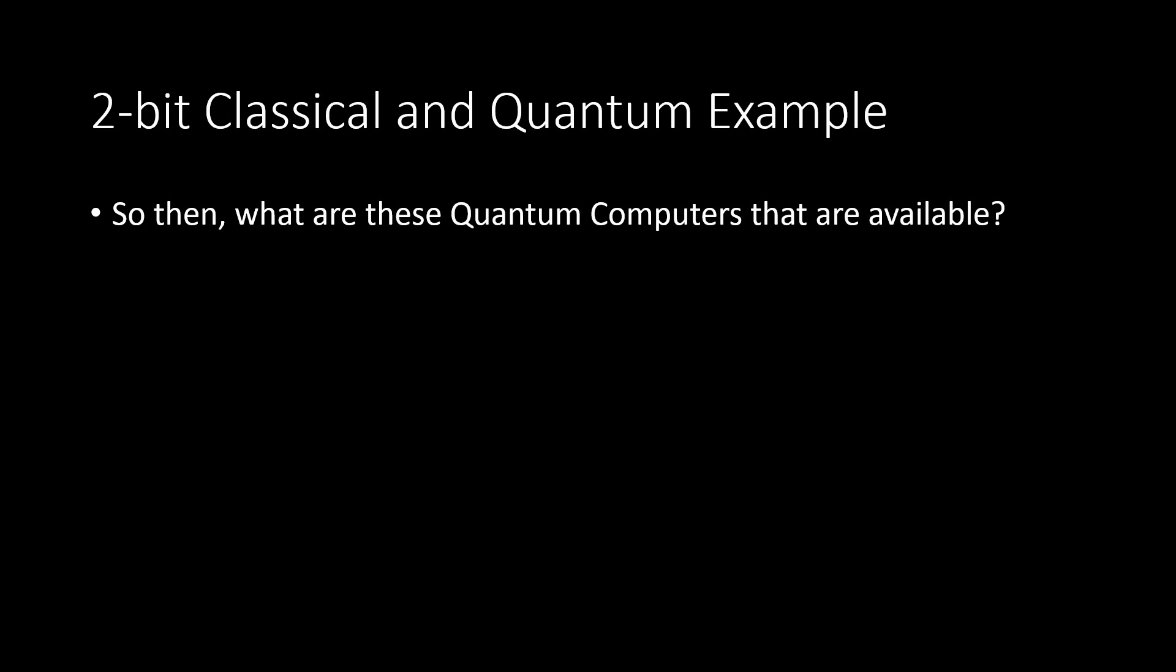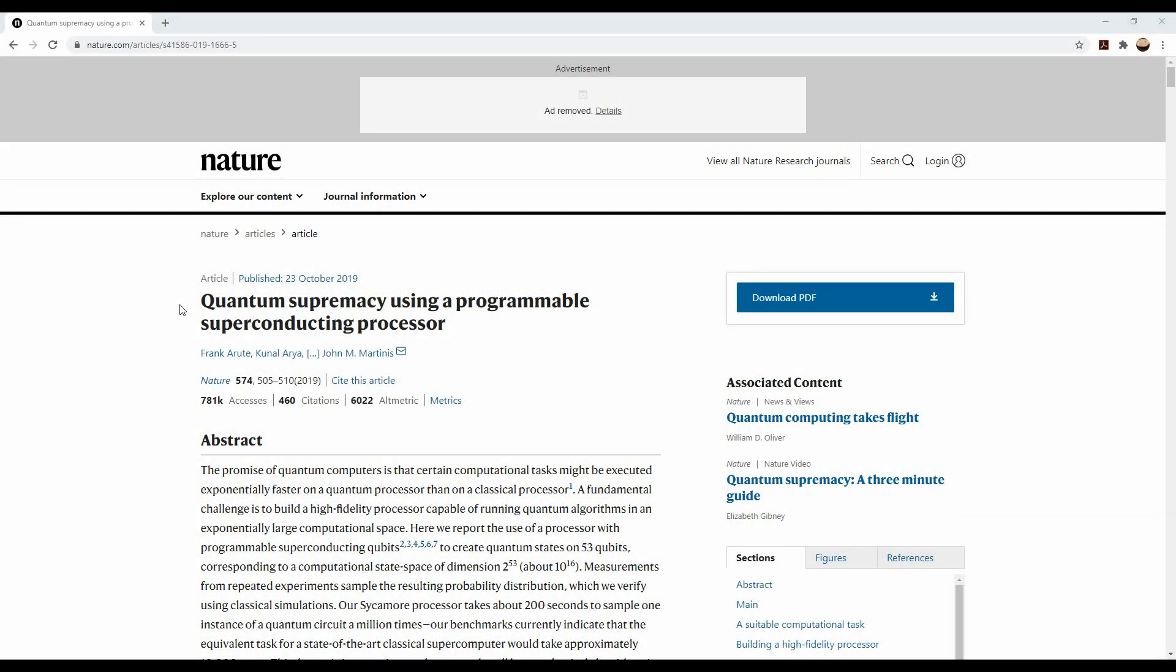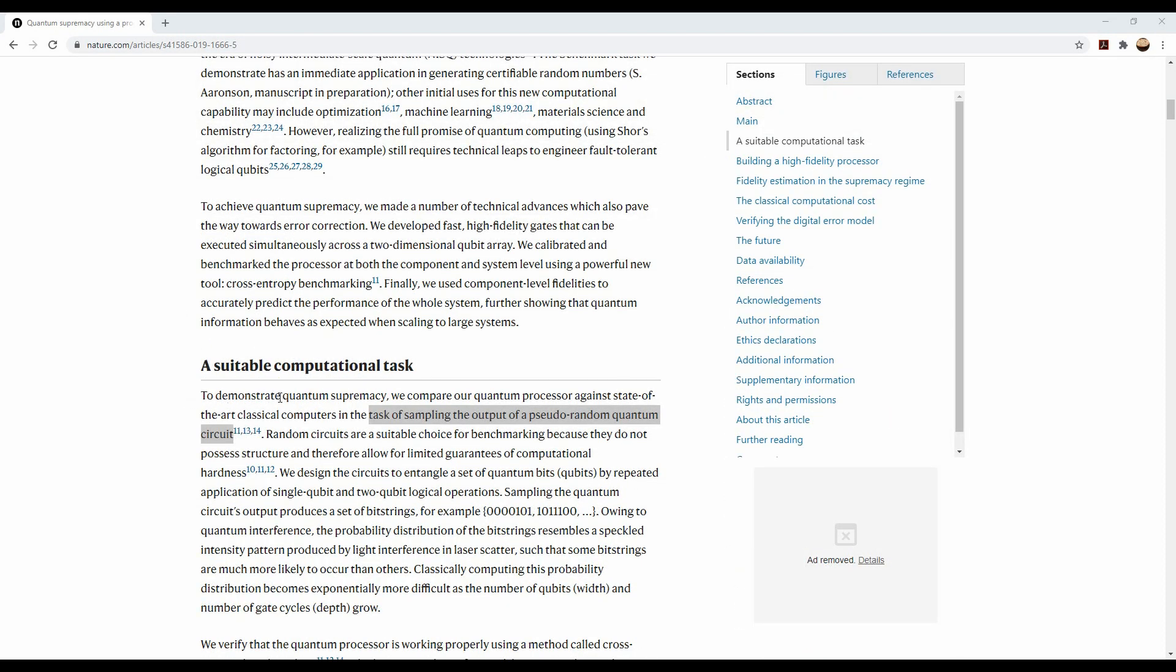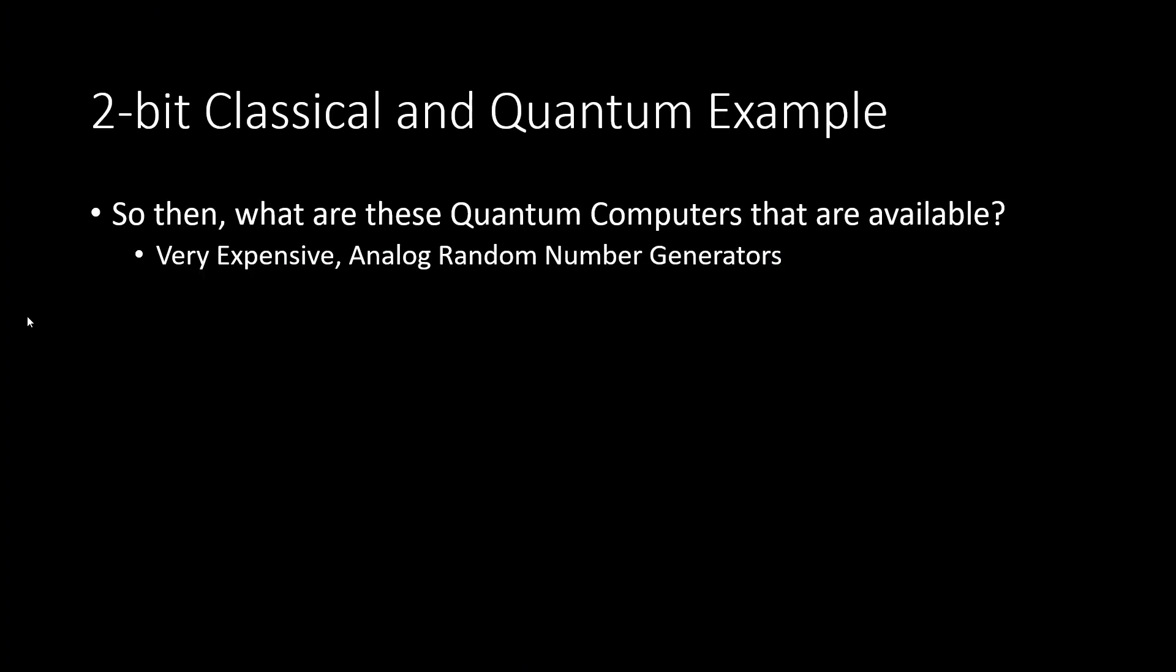So then what are these quantum computers that are available for people to use? There's a simple answer to this. They are analog random number generators. So this is the article that was written up by Google when they claimed their quantum computer was supreme to any classical computer. But what did it do? What Google did to demonstrate quantum supremacy was take a large sampling of random numbers from their quantum qubit circuits. And that's it.